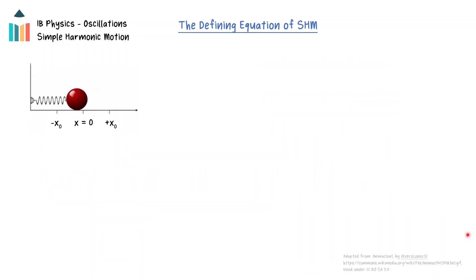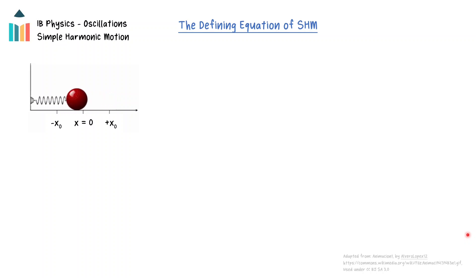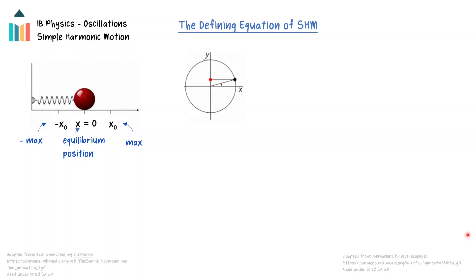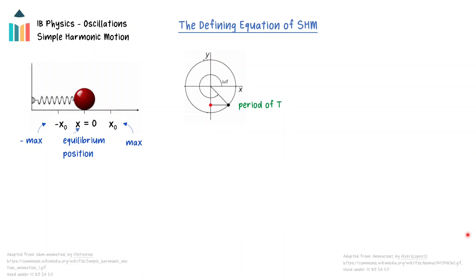Simple harmonic motion can be modeled using circular motion. A mass on a spring on a frictionless horizontal surface will move in simple harmonic motion. This motion is one-dimensional and has a constant period. The mass oscillates between a negative and positive maximum displacement through an equilibrium point. If we consider a point moving in circular motion and observe its motion in one dimension, the point will be moving in simple harmonic motion with the same period as the circular motion. Simple harmonic motion can be considered a one-dimensional projection of circular motion.